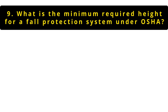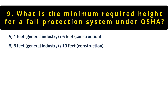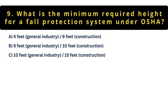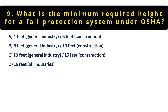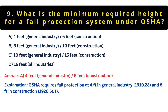Question 9: What's the minimum height for fall protection under OSHA? Option A: 4 feet in general industry, or 6 feet in construction. Option B: 6 feet or 10 feet. Option C: 10 feet or 15 feet. Option D: 15 feet, all industry. It's A — 4 feet in general industry and 6 feet in construction. OSHA's fall protection rules differ by sector. Always check 1910 for general industry or 1926.501 for construction.